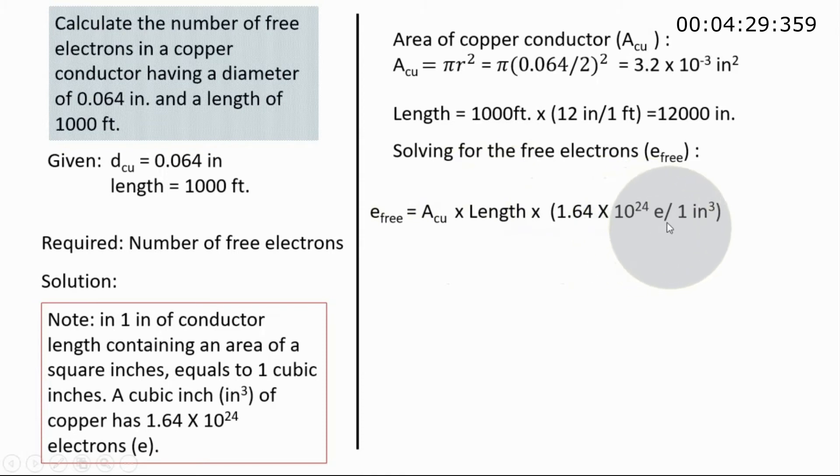This one we can say is the conversion factor. We can use this as a conversion factor in the sense that we know already that one cubic inch equals 1.64 times 10 to the 24 electrons. So we use this to be able for us to solve for the electrons. The unit of the area and the length is in cubic inches, so cubic inch will be cancelled out, and what remains is the electron.